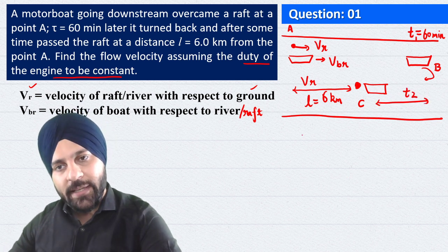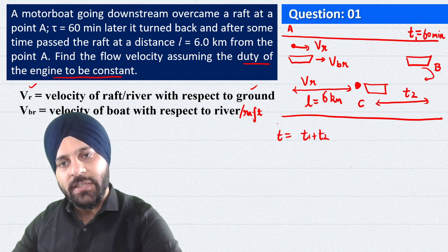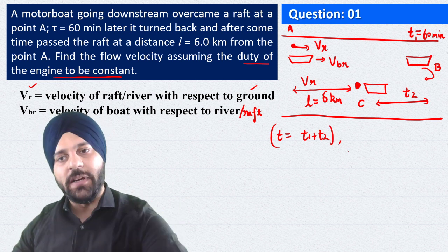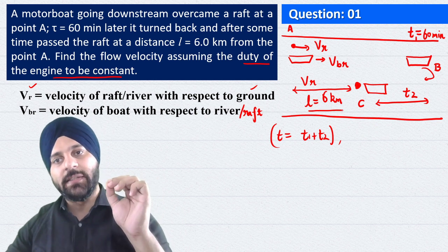So total time which duration is T1 plus T2. This total time is which time the raft is also moving. This means that raft is moving which distance is 6 kilometers.